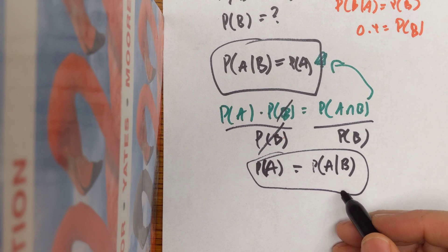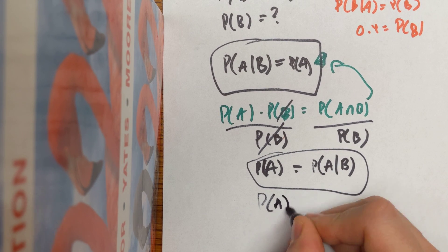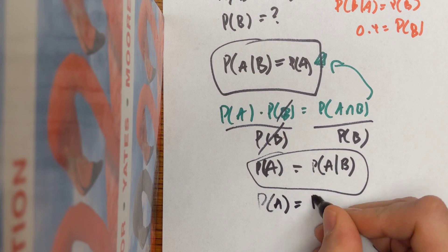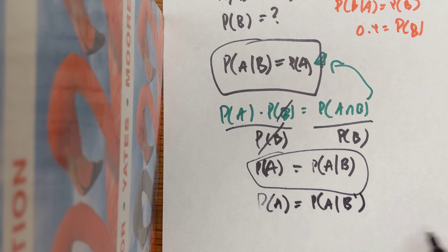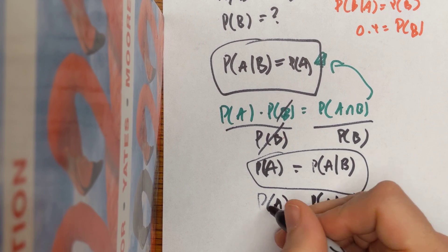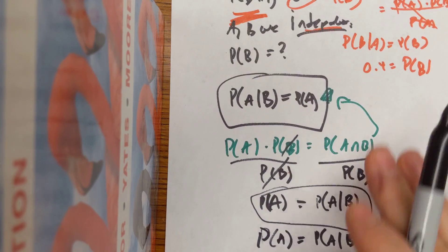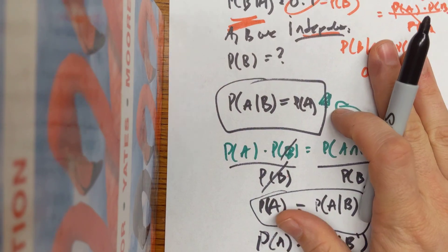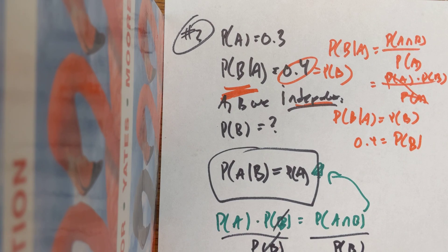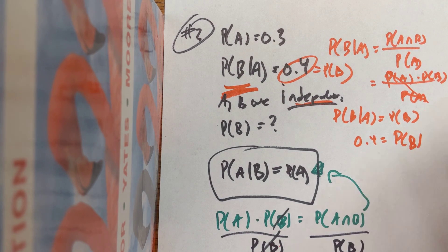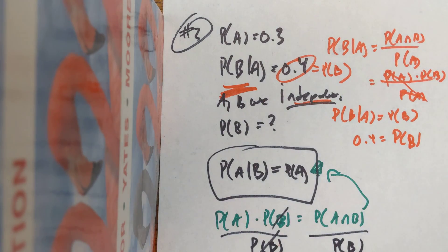From this, you could also show that the probability of A equals the probability of A given not B — that'd be a little bit more work, but we can prove stuff like that as well. Anyway, I hope this is very helpful to you. Have a beautiful day. Peace and love.